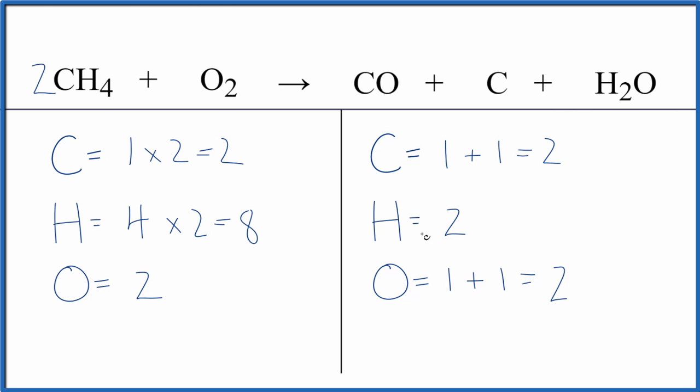Let's fix the hydrogens. How about a four in front of the H2O? Two times four, that gives us eight. Let's update the oxygens. So we have the one here, plus we have the four times the one, that's four. So we have five oxygen atoms.